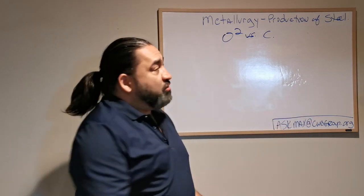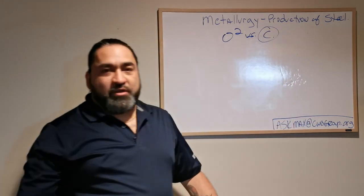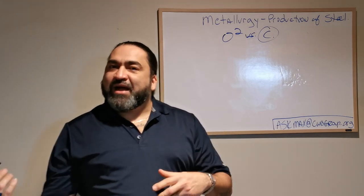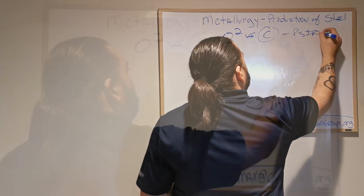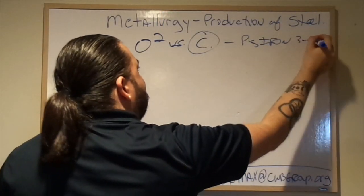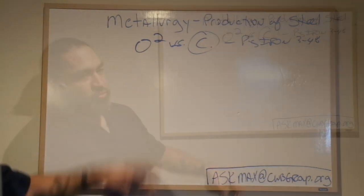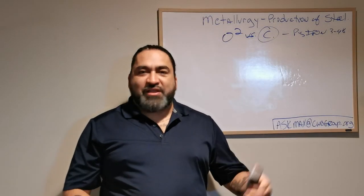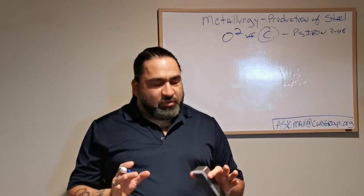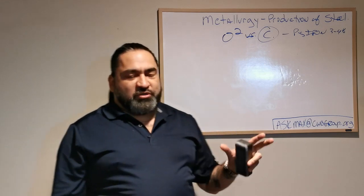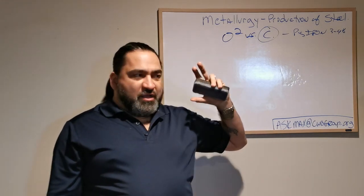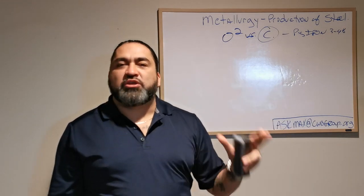Let's start with carbon. Pig iron, we talked about, has 3% to 4% carbon. And I said earlier that's way too high. When I talk about being way too high — well, that doesn't seem like a very high number. But that's like incredibly hard steel. And you're thinking, well, hard steel is good steel. Well, not so much. One of the best things about steel is its ability to be malleable, formed, and ductile. That means I can hammer it, I can bend it, I can form it, and then it keeps its shape.